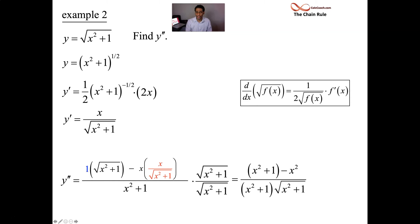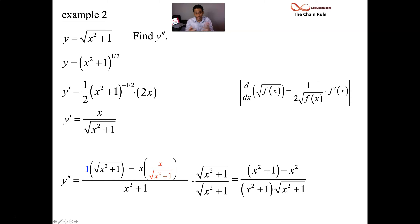Now in the numerator, the x squared terms cancel and you just have 1. If you have something times the root of itself, the outside is to the first power and the root is to the half power — you add those exponents together. So x squared plus 1 to the 1, times x squared plus 1 to the one half, gives x squared plus 1 to the three halves. That is the second derivative.